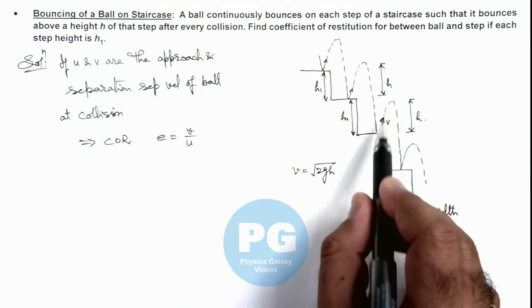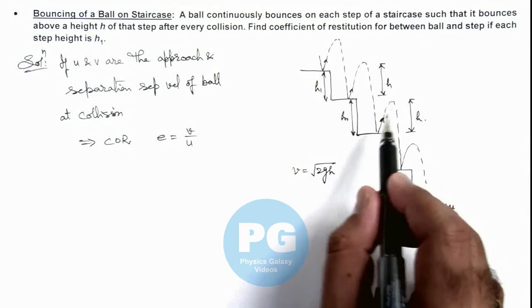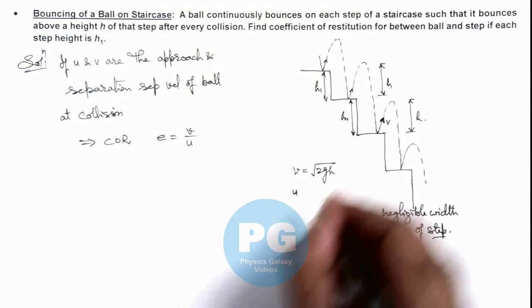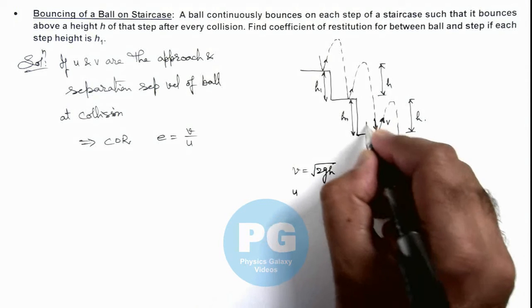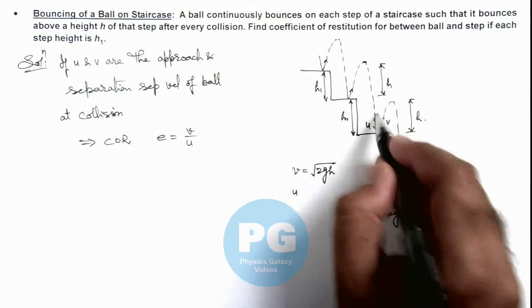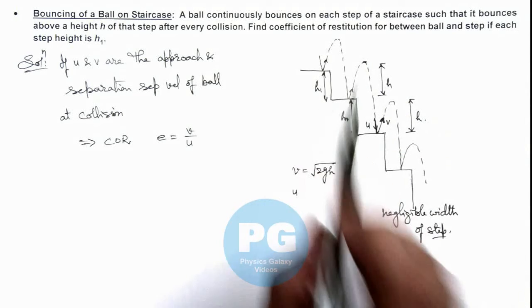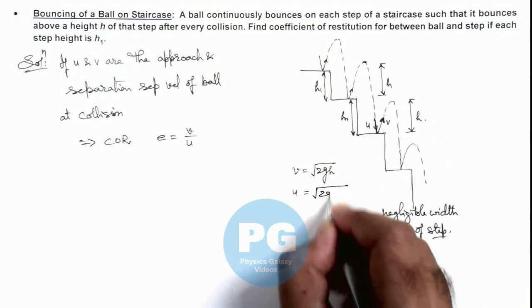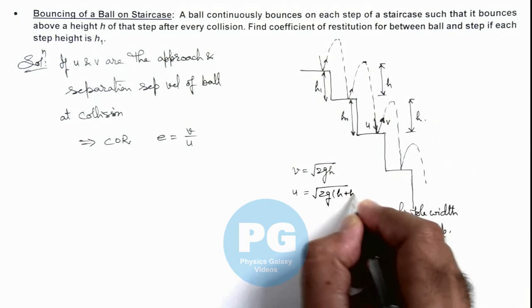you can write the speed with which the ball will be bouncing off will be equal to √(2gh), and the speed u with which the ball is striking is after traveling a distance h plus h₁. After starting from rest it is in free fall, so u can be written as √(2g(h + h₁)).